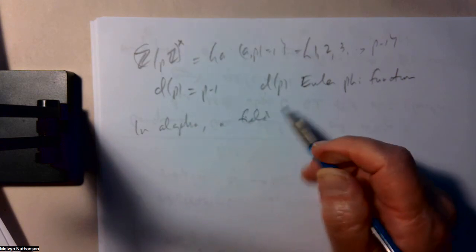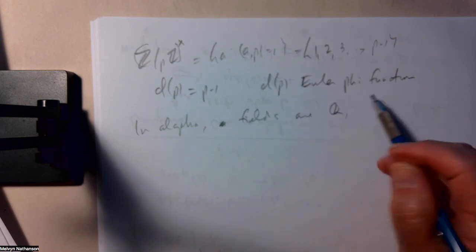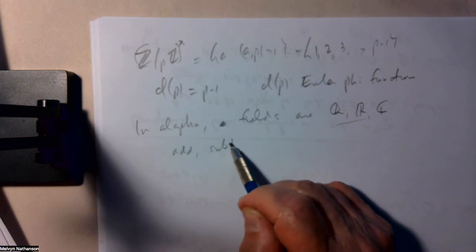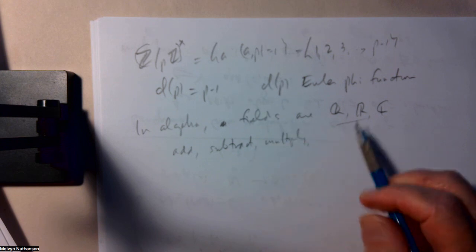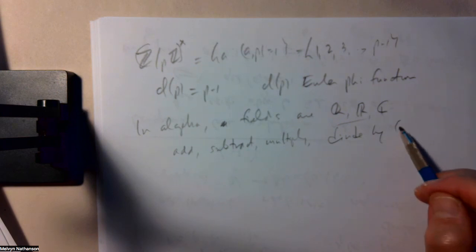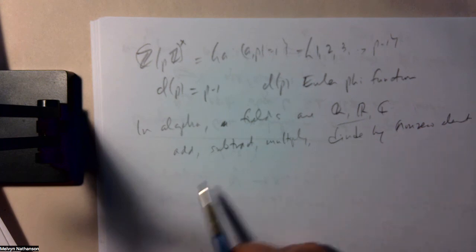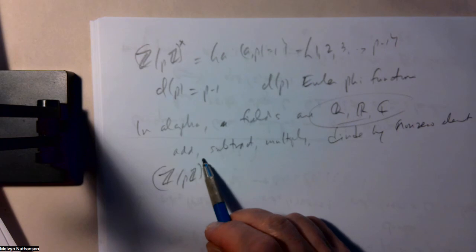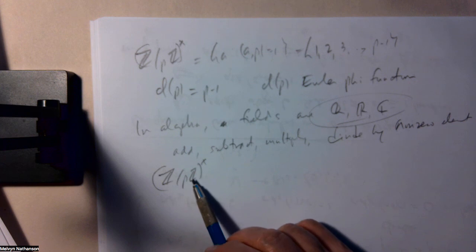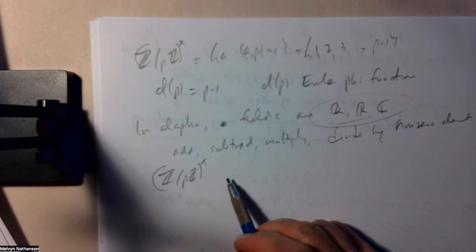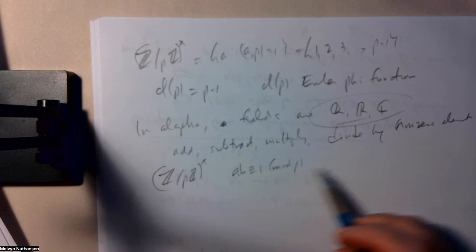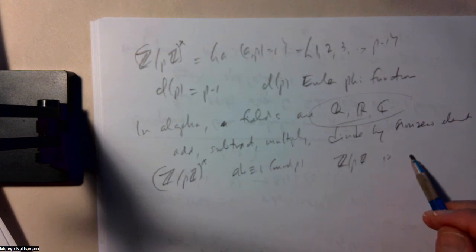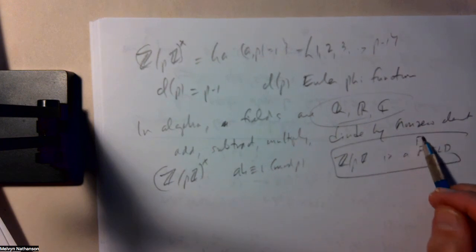In algebra, a field—examples of fields are, let's say, the rational numbers, the real numbers, the complex numbers. And they're fields because you can add, subtract, multiply, and divide, but only by a non-zero. So these are infinite fields, all the fractions, all the real numbers, all the complex numbers. If we look at the congruence classes mod p, not including zero, everything here has an inverse. You can always solve ab congruent to 1 mod p. And Z mod pZ, the set of numbers that are congruent mod p, is a fourth example of a field. This is a finite field.